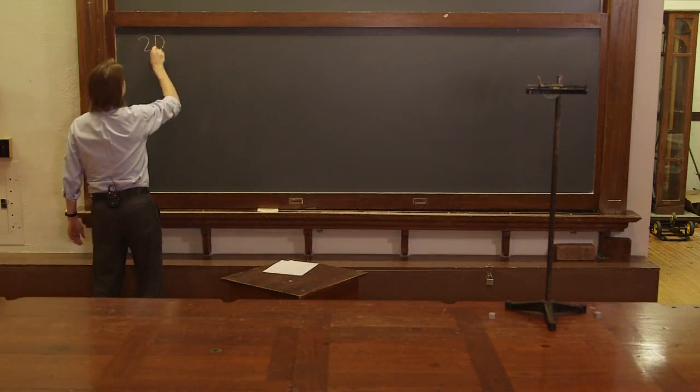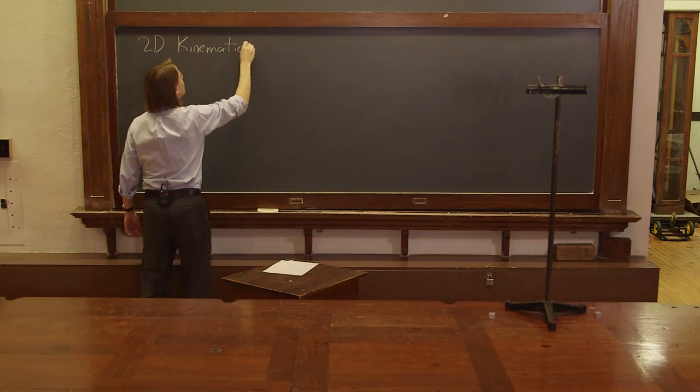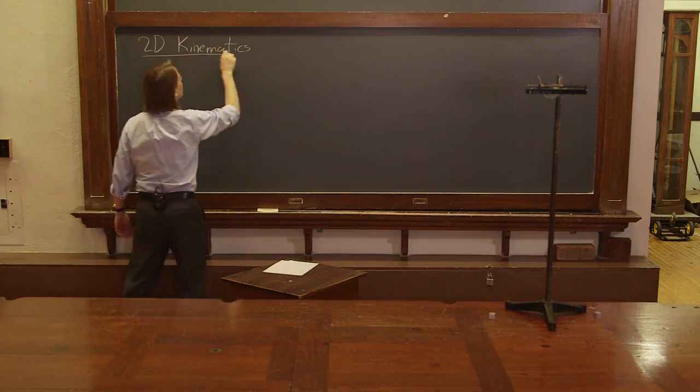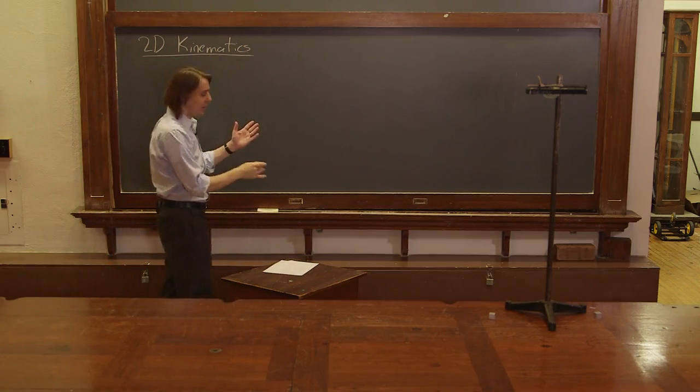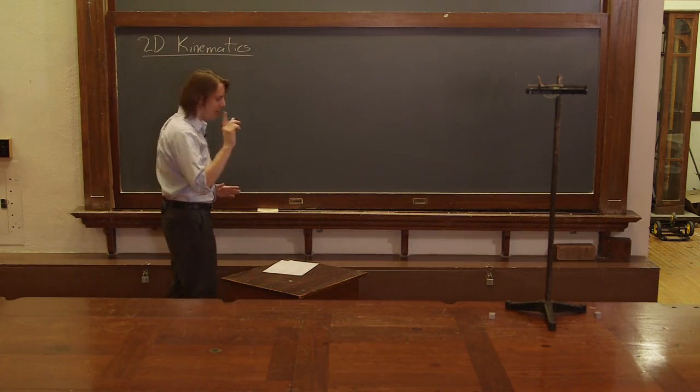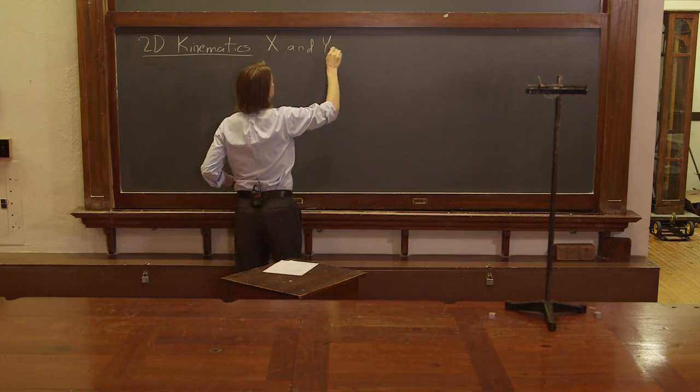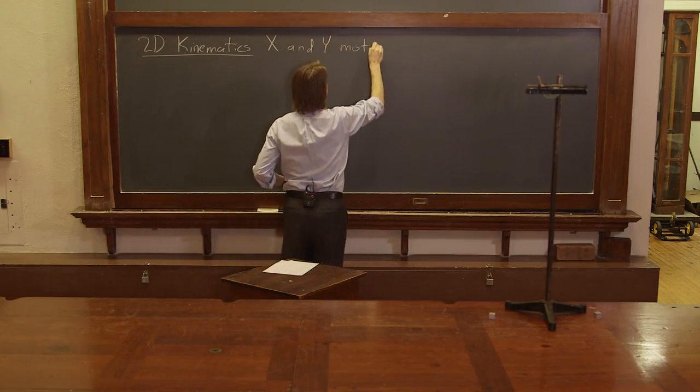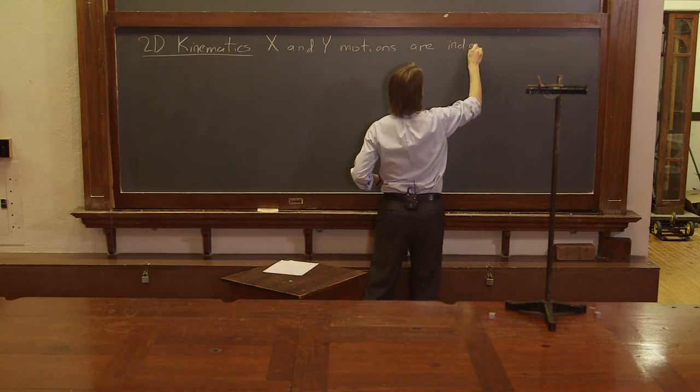Two-dimensional kinematics - we're gonna study the motions of objects in a two-dimensional plane in X and in Y at the same time. But there's only one thing you've got to remember: X and Y motions are independent.